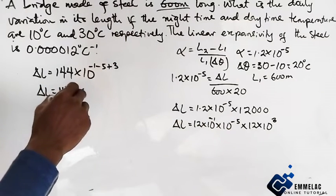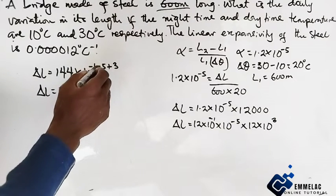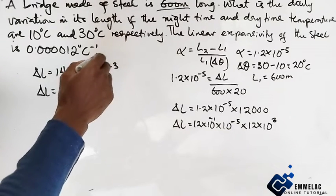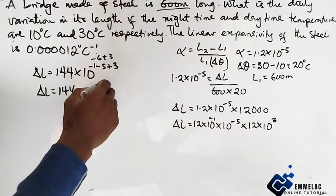144 × 10, this is -1 and -5 plus 3 will give us -3.